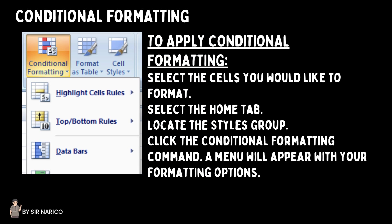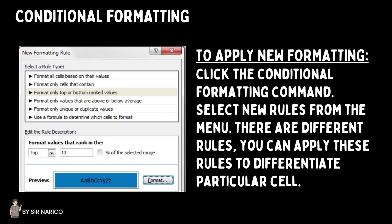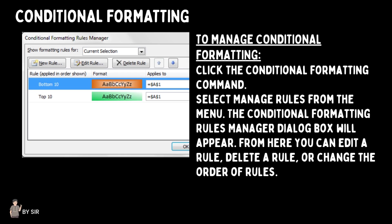To apply conditional formatting: select the cells you'd like to format, select the Home tab, locate the Styles group, and click the Conditional Formatting command — a menu will appear with your formatting options. To remove conditional formatting, click the Conditional Formatting command and select Clear Rules, then choose to clear rules from the entire worksheet or selected cells. To apply new formatting, click Conditional Formatting and select New Rules. To manage conditional formatting, select Manage Rules — from here you can edit a rule, delete a rule, or change the order of rules.